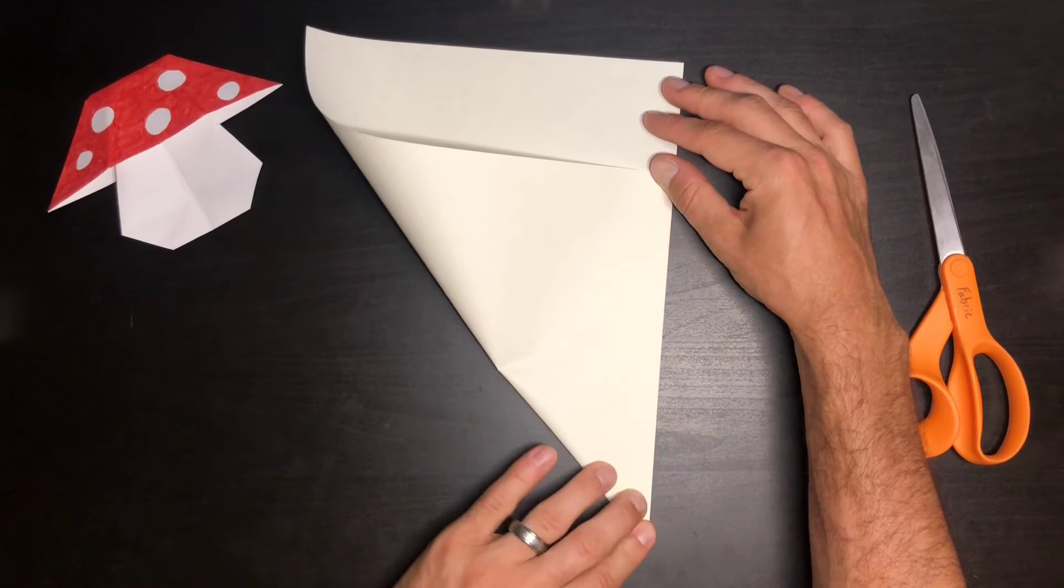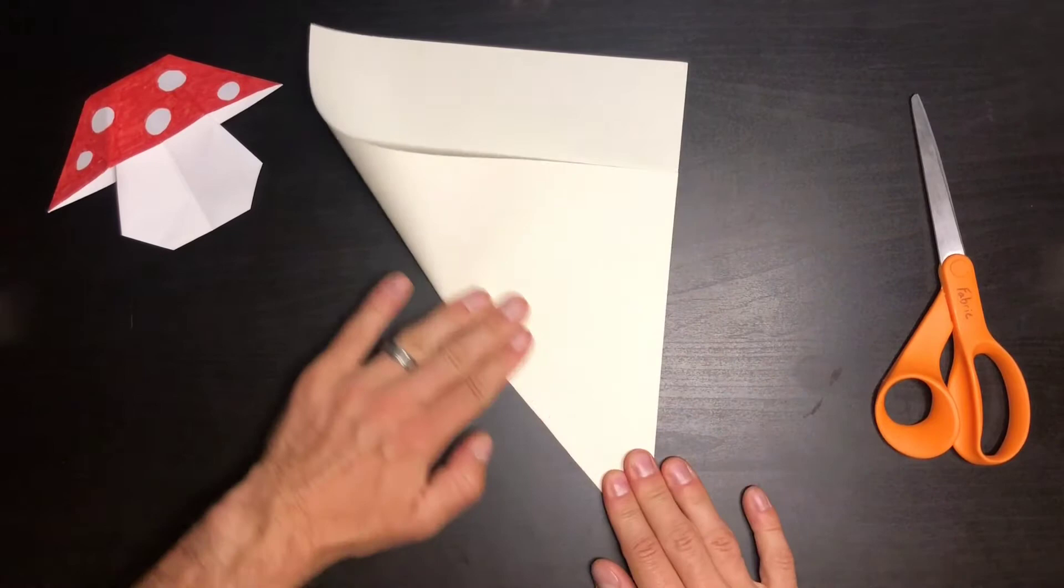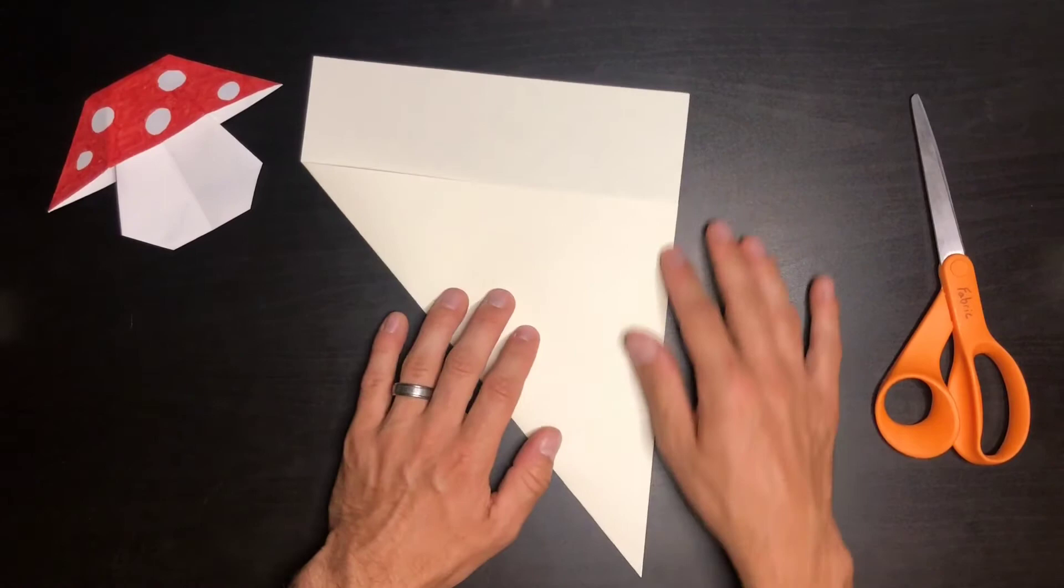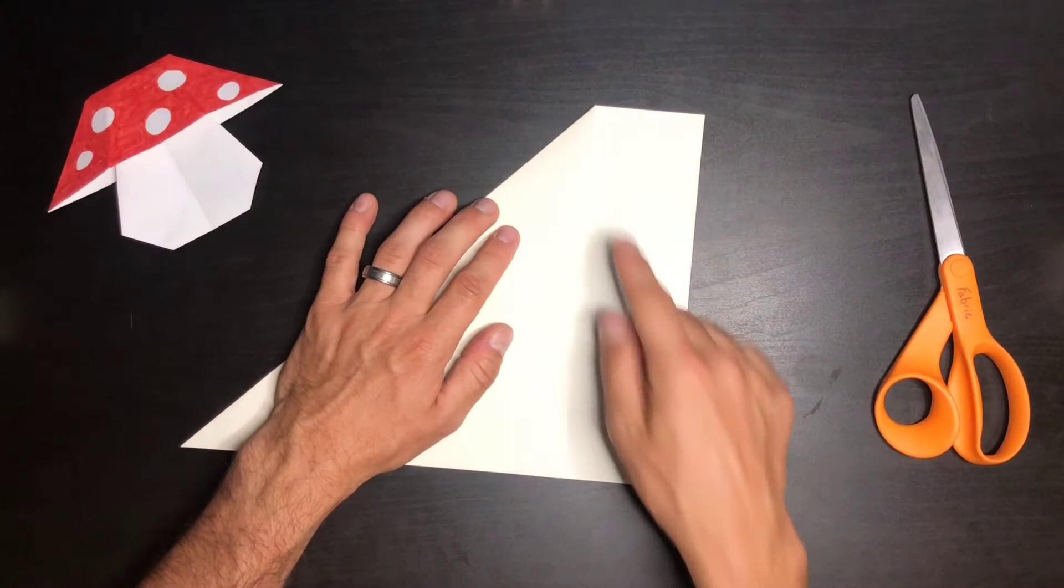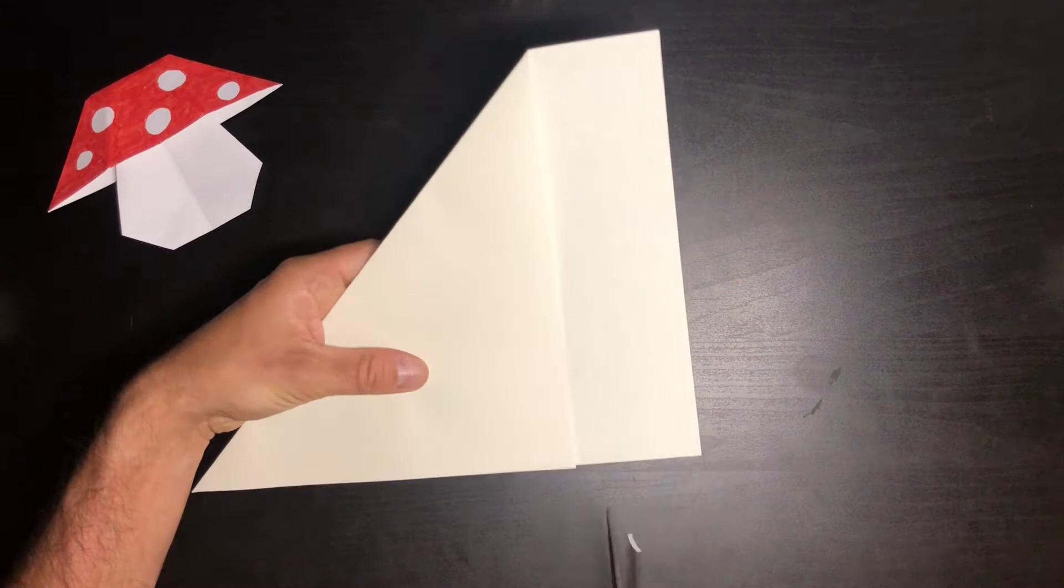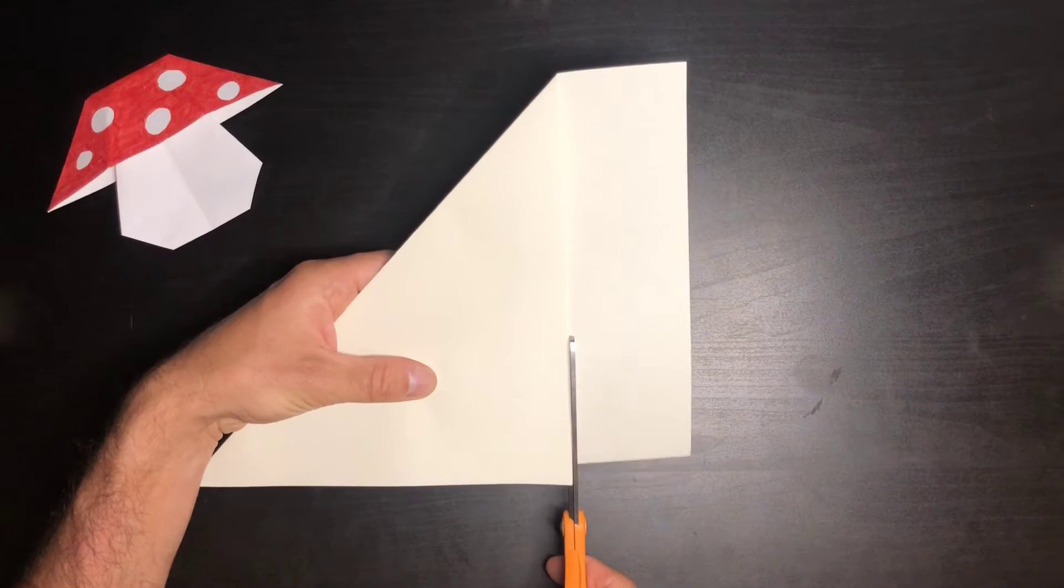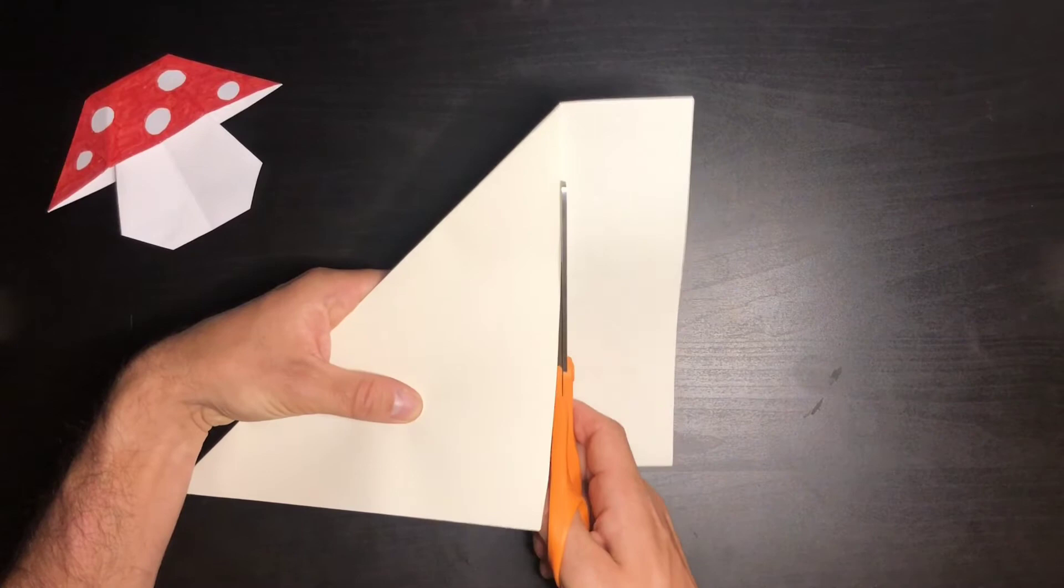Once you get it set, then you can give it a good push on the crease nice and hard. It doesn't have to be perfect, but close is good enough. And now that is done, now I'm going to cut along this edge. You could also draw a line and cut if you'd like, or you may need the help of someone else in your home. I'm just going to cut right along that folded edge to make a square piece of paper.